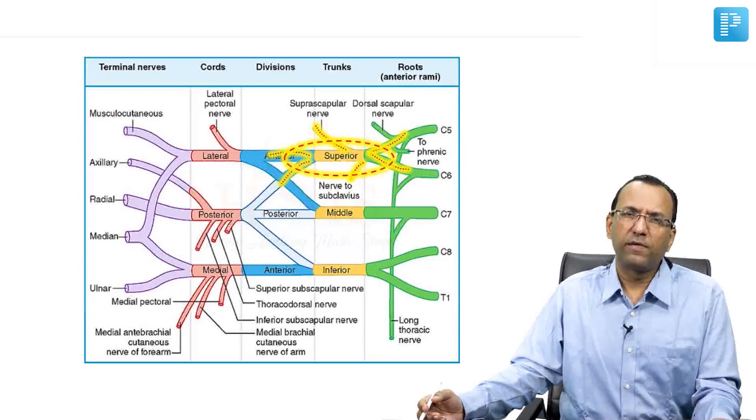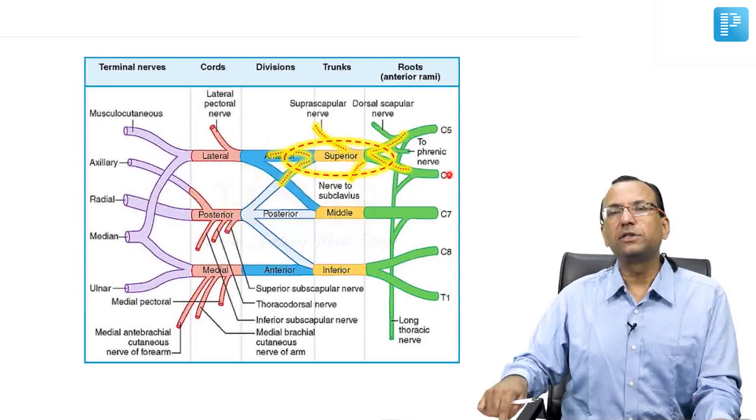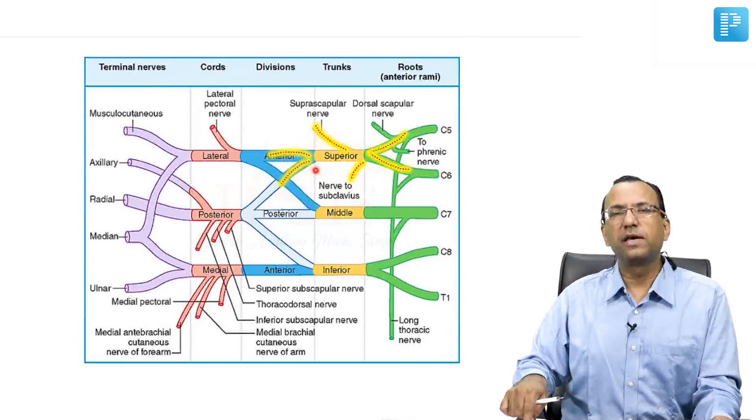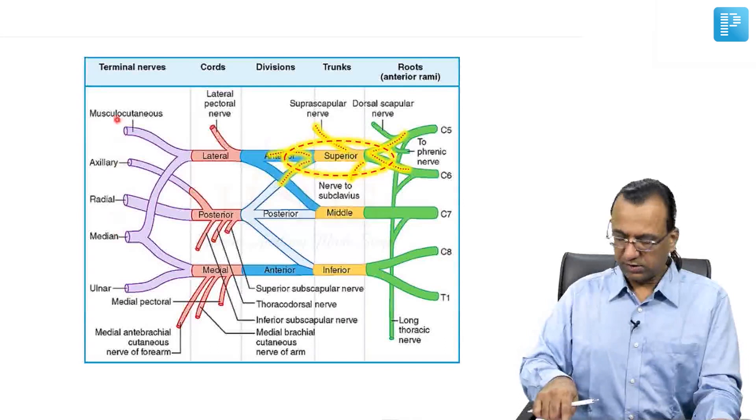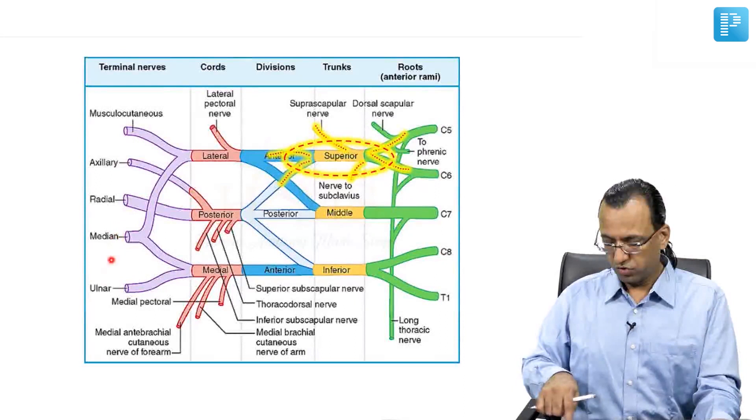Now what is the importance of Erb's Point? If it is damaged there will be Erb's Palsy involving root value C5, C6 and which muscle compromise? Any muscle which is supplied by the root value C5, C6. Which nerves could they be? Musculocutaneous nerve, axillary nerve, radial nerve, and median nerve.